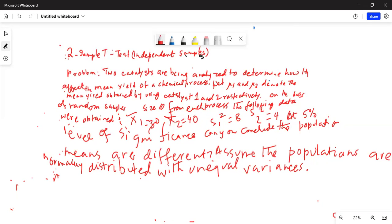On the basis of random sample of size 10 from each process, the following data were obtained: x1 bar equal to 30, x2 bar equal to 40, s1 square is equal to 3 and s2 square equal to 4.